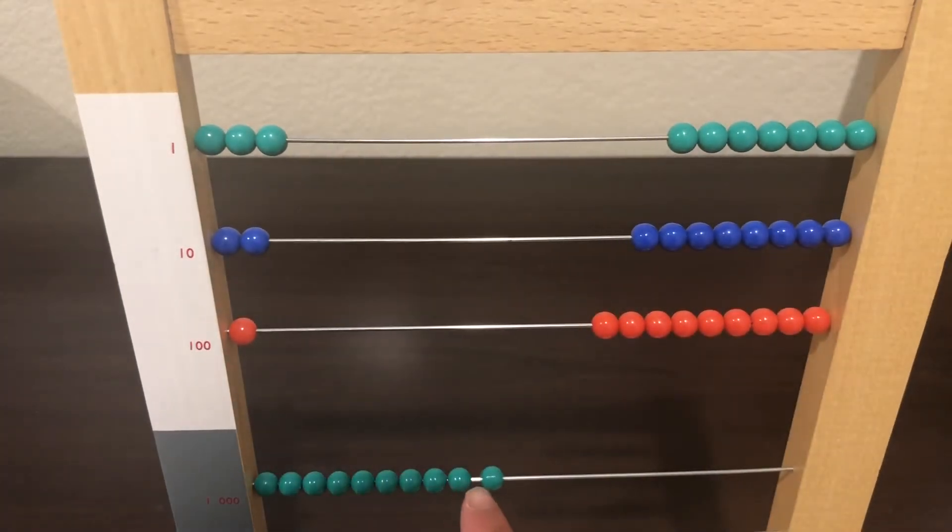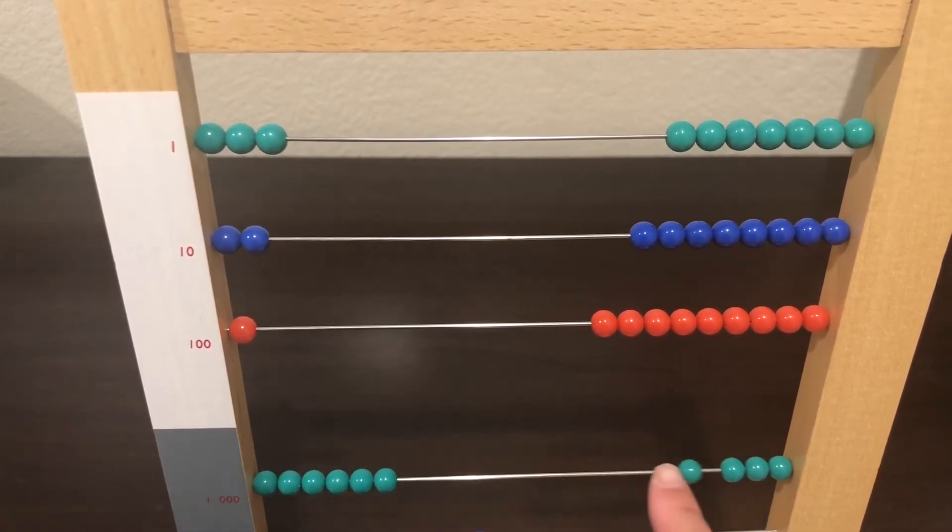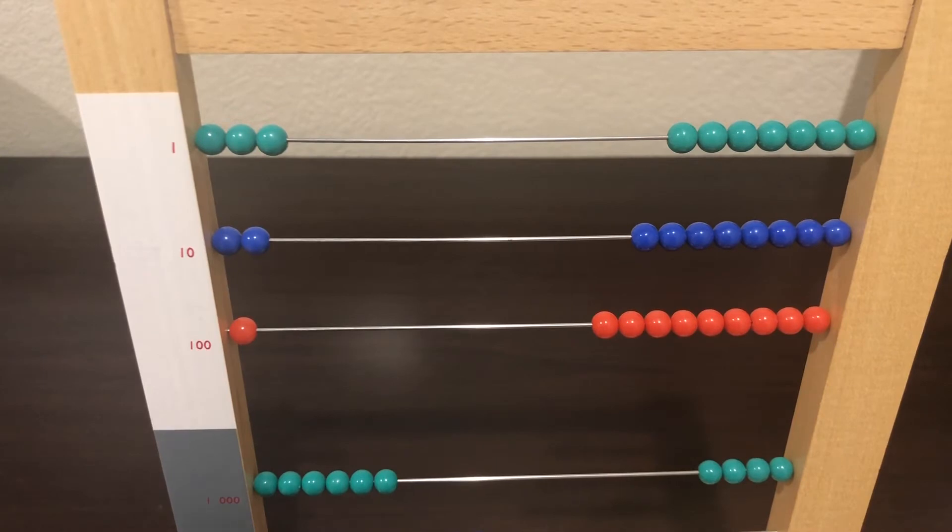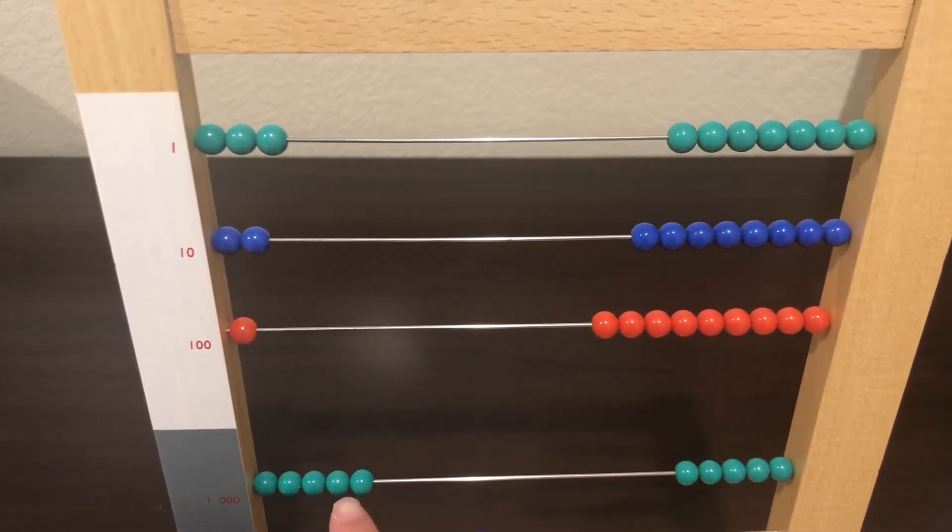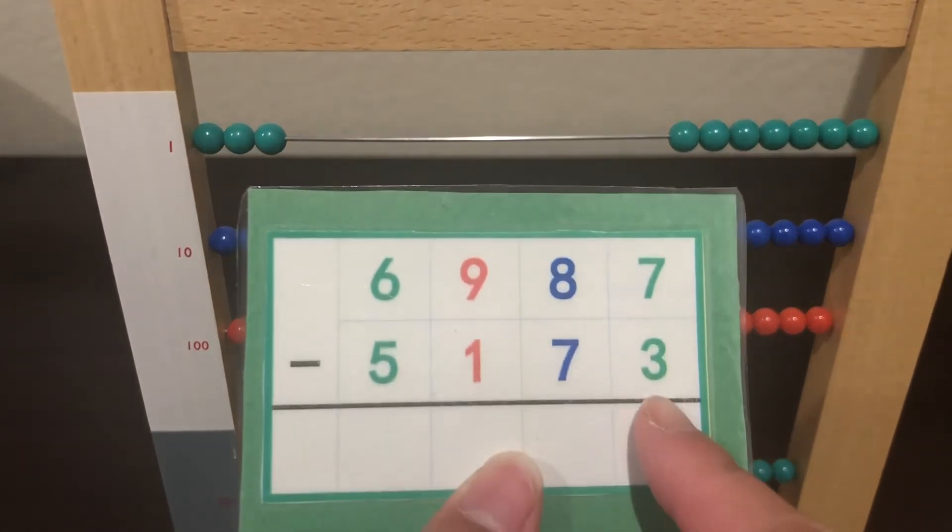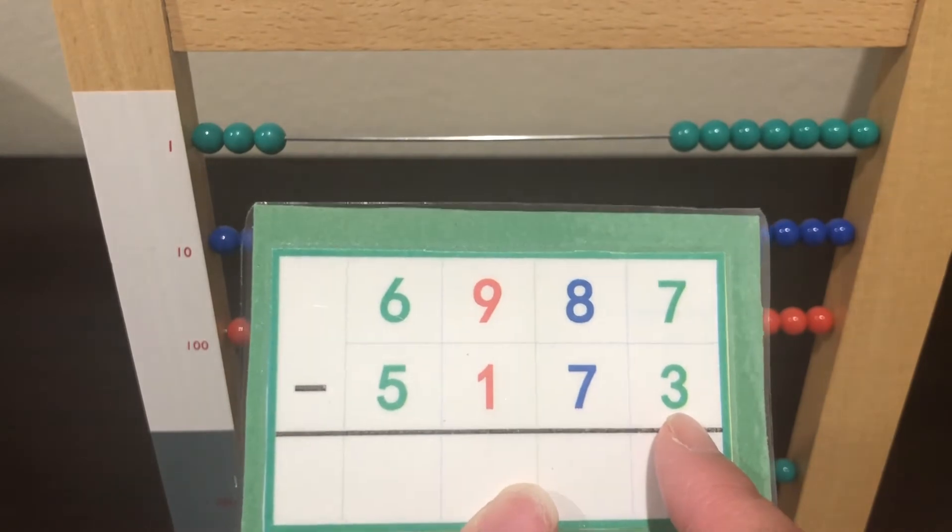1,000, 2,000, 3,000, 4,000, 5,000, 6,000. Now we are going to take away 3 units.